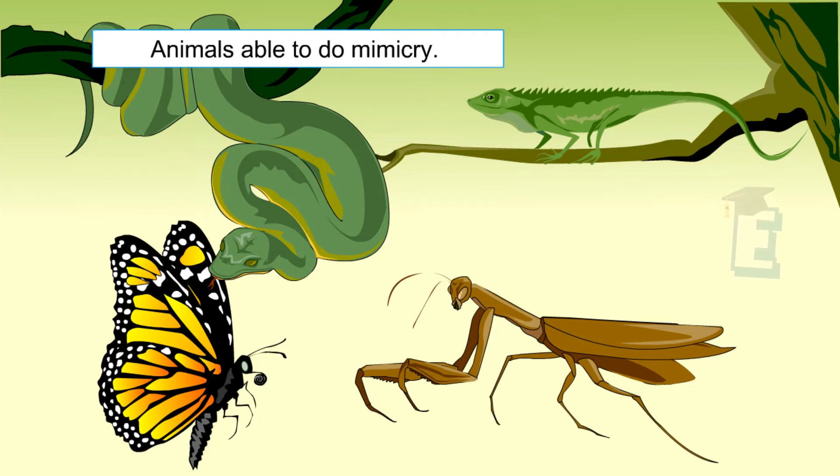In general, the purpose of organisms doing mimicry is to avoid their predators or to deceive other organisms so they become less visible.